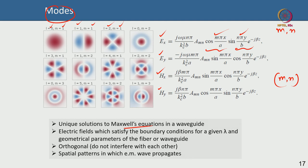Different combinations of m and n give different modes, shown here as different colorful shades — these are the different spatial patterns in which the wave propagates inside the waveguide. Modes are orthogonal and do not interfere with each other, but they are different solutions to Maxwell's equations and they can propagate in the waveguide independently.